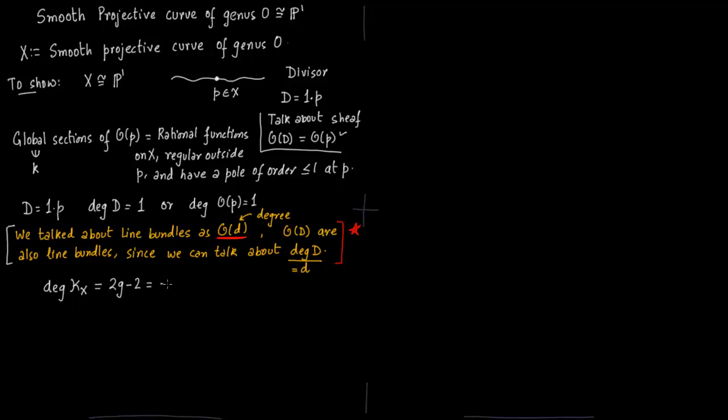Notice that degree of k_x is 2g minus 2. g is 0, you get minus 2. And therefore degree of k_x tensor with dual of O_p, which will be used in Riemann-Roch, is minus 2. O_p has degree 1, so O_p star has degree minus 1, it is dual of O_p. So your tensor means you just add these two up: minus 2 minus 1 will give you minus 3. Now since the degree is negative, the global sections are 0. This is an important point you should always keep in mind: when the degree is negative, global sections are 0.